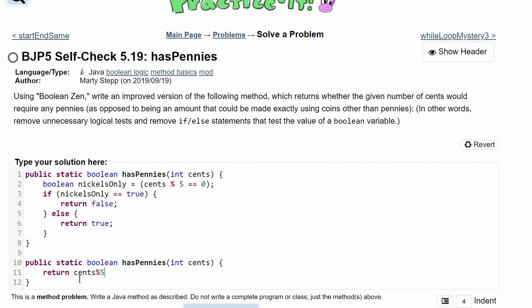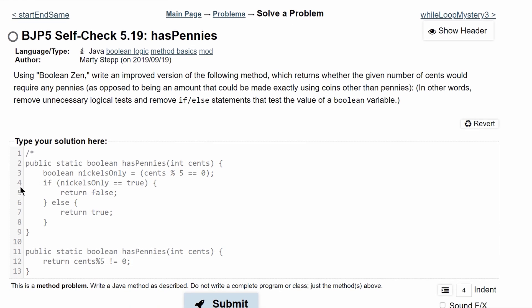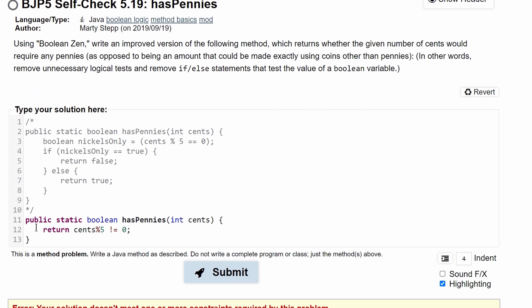This is going to return whether the given number of cents would require any pennies. So we're going to say does not equal zero. Then we can close this off and comment this out because we're using this as our springboard.